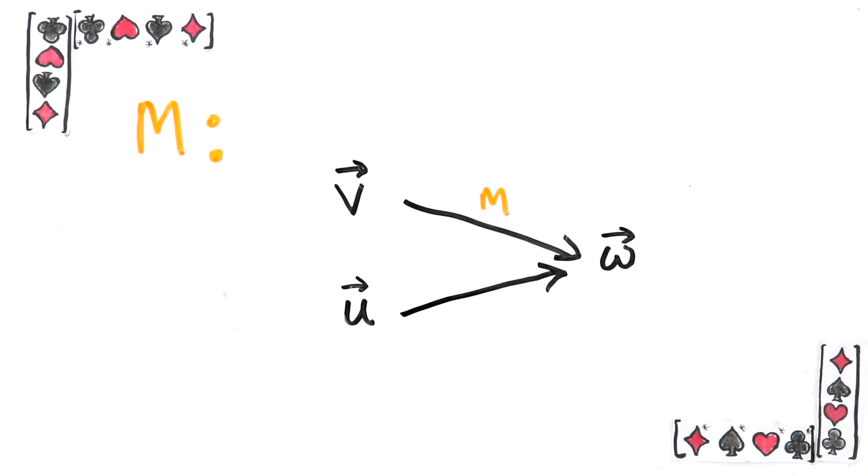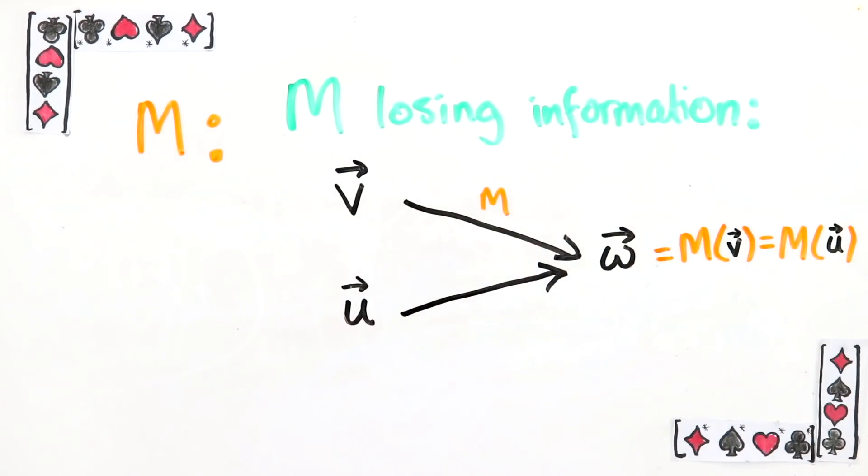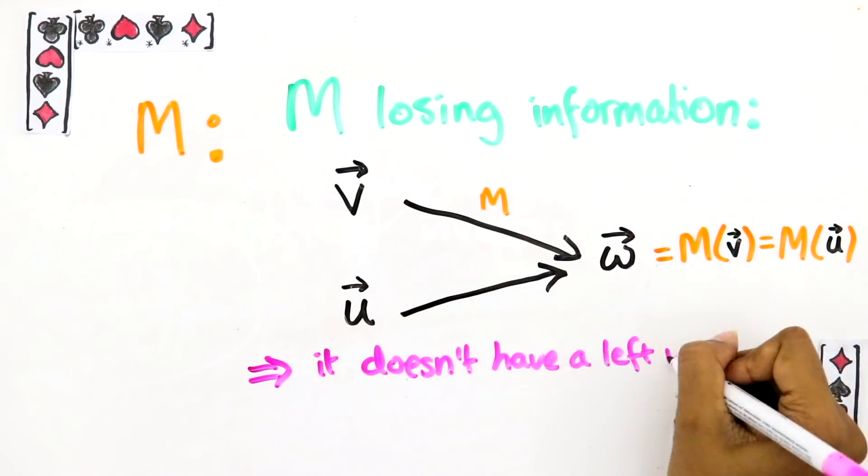This thing here, where two different vectors V and U get mapped to the same vector, i.e. MU equals MV, is what I'll call M losing information. What we've just seen is that if M loses information, it doesn't have a left inverse.